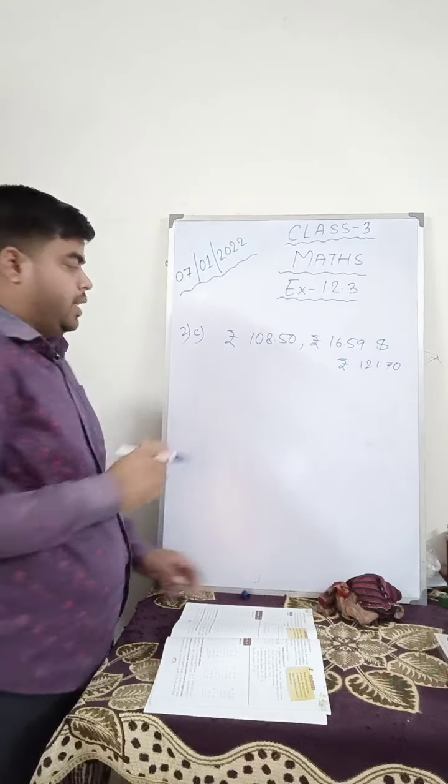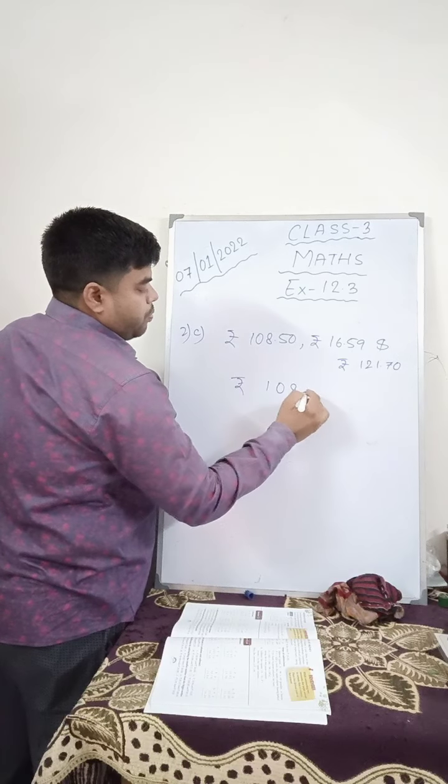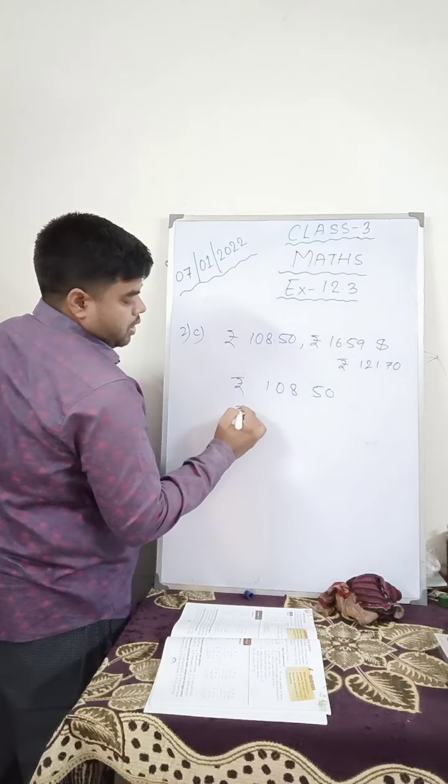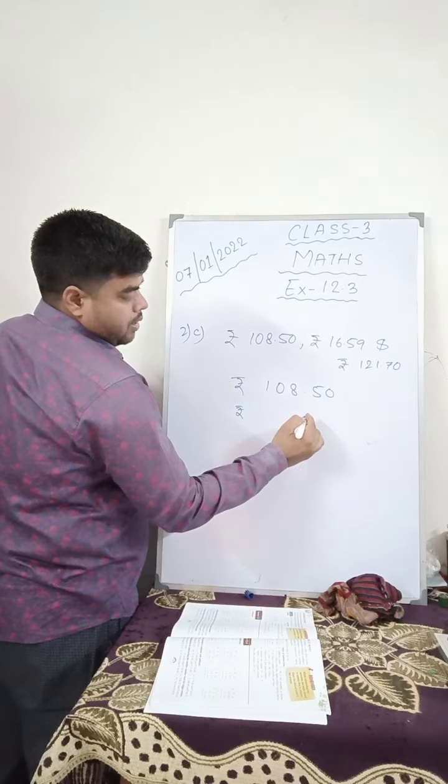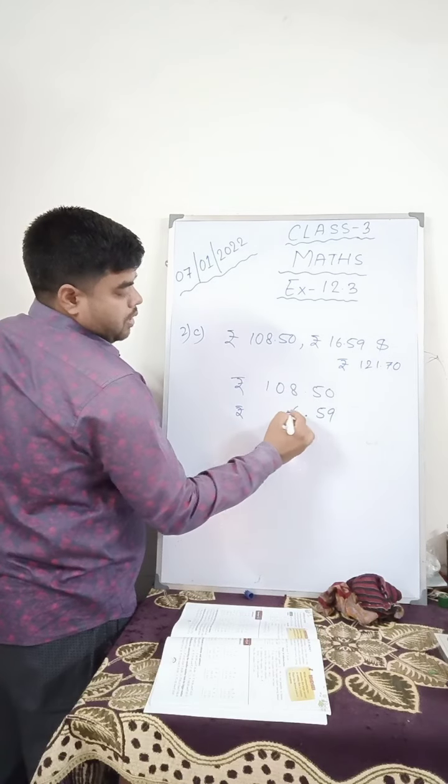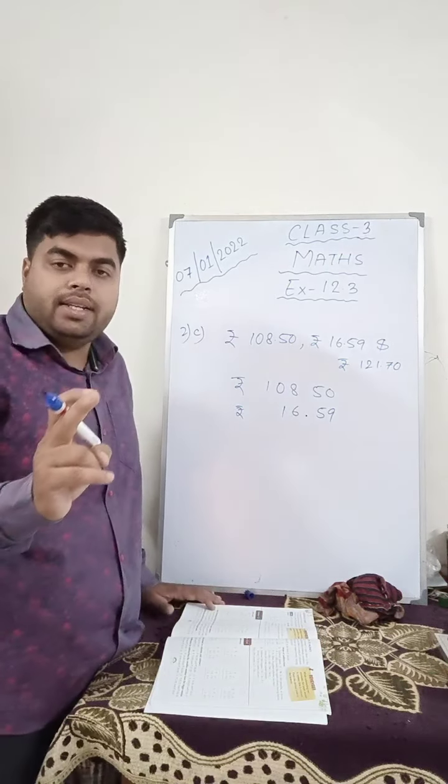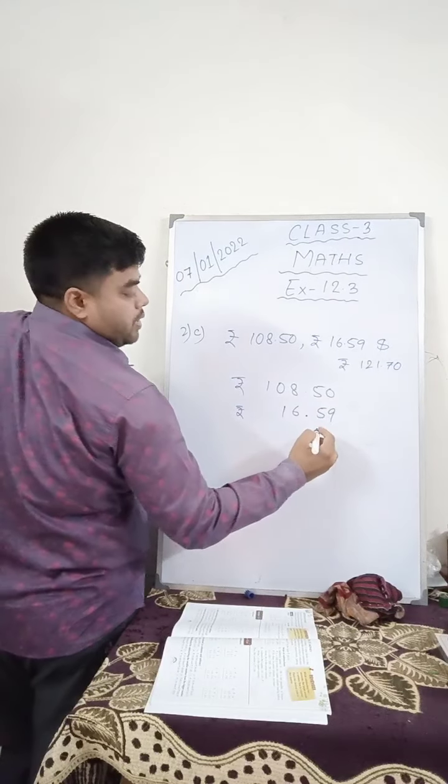This arrangement, you see again, first one you write 108.50 rupees. This decimal has to be written in one straight line. Now you arrange the digits: 59 and here 16, 6, 1. We don't arrange the digits for addition and subtraction from the front. We always arrange from the back.